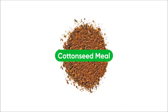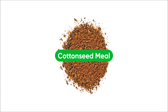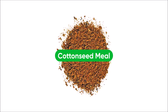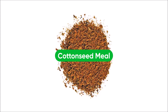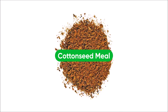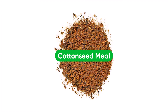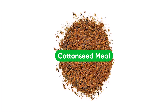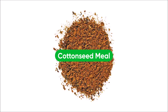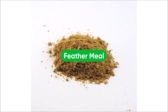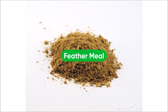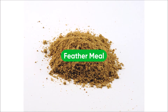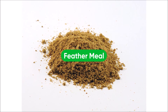Cotton seed meal: generally found with an NPK ratio of 6-0-4, it is recommended for plants favoring acidic conditions. Feather meal: high in nitrogen but is slower to break down by soil microbes than blood meal.